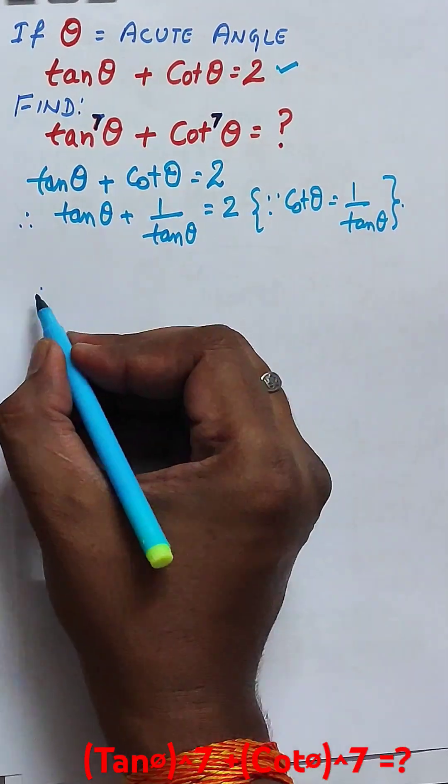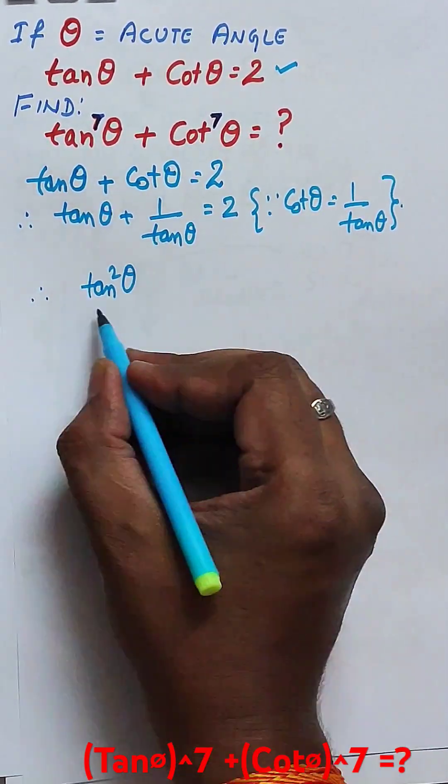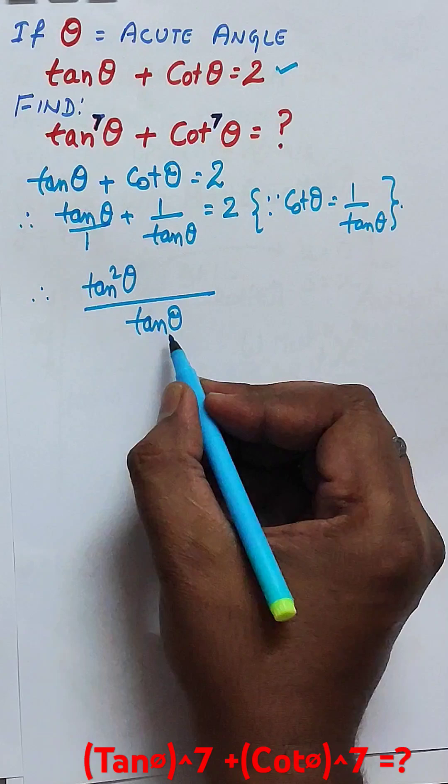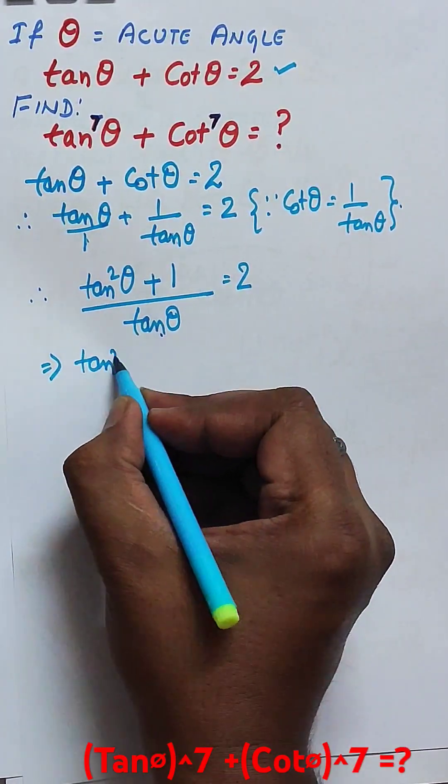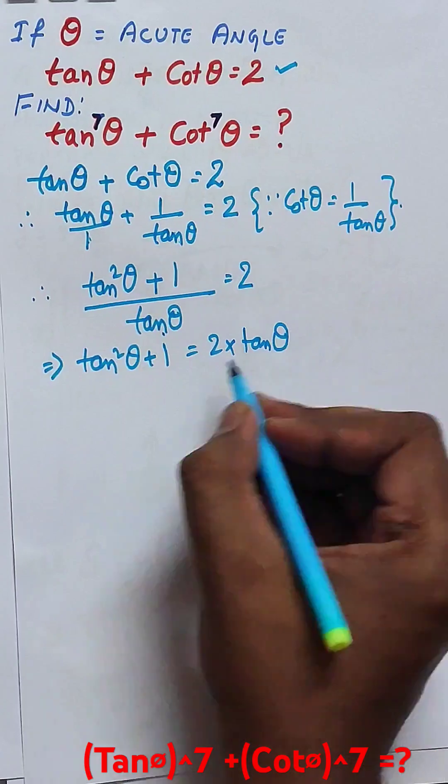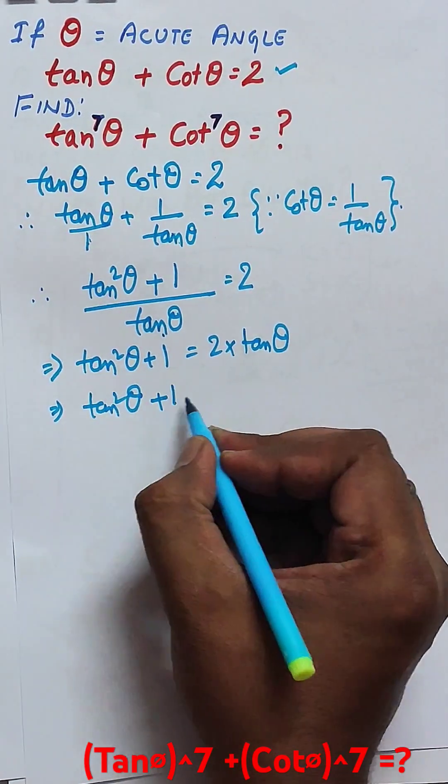As given, tan theta plus cot theta equals 2. Just expand it: write cot theta as 1 by tan theta. Taking the common denominator, we get tan squared theta plus 1 minus 2 tan theta equals 0.